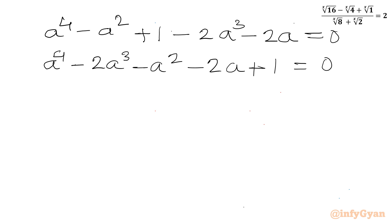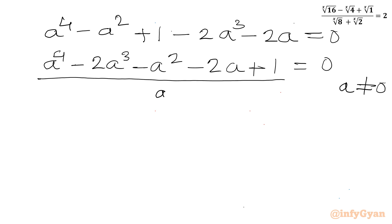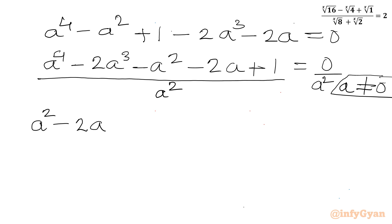Now I can divide this equation by a² since a is non-zero. Dividing both sides by a² gives: a² - 2a - 1 - 2/a + 1/a² = 0.